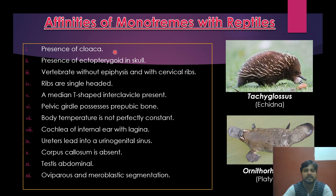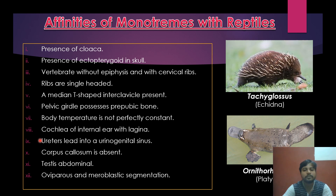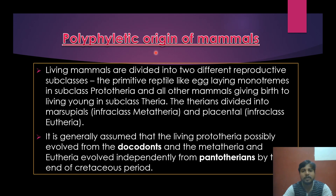Features indicating reptilian ancestry in primitive mammals include: an actor pterygoid in the skull, vertebrae without epiphyses with cervical ribs, single-headed ribs, a median T-shaped interclavicle, a pelvic girdle with pre-pubic bone, body temperature not perfectly constant, a cochlea with lagena, ureters opening into a urogenital sinus, corpus callosum absent, testes in the abdomen, oviparous reproduction, and meroblastic segmentation. Tachyglossus and Ornithorhynchus — the duck-billed platypus — are examples of Monotremata.